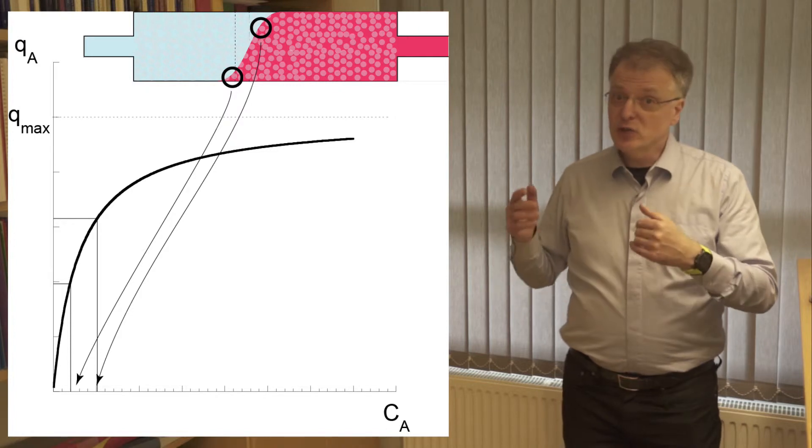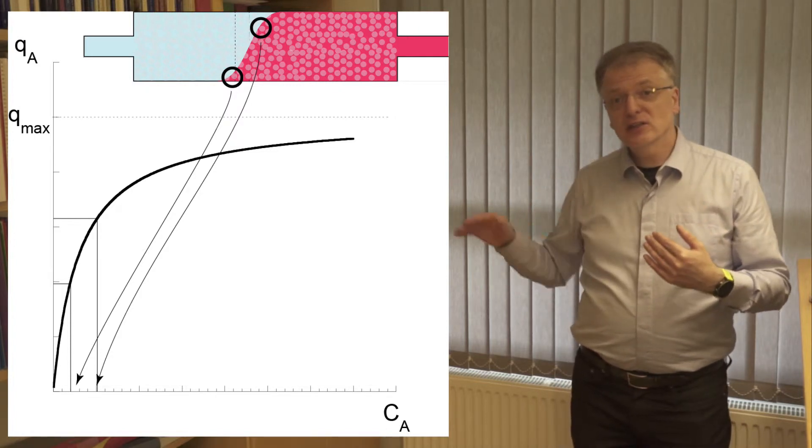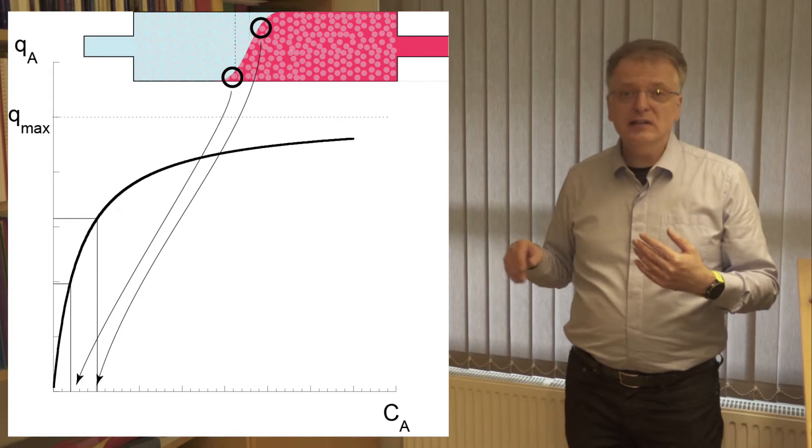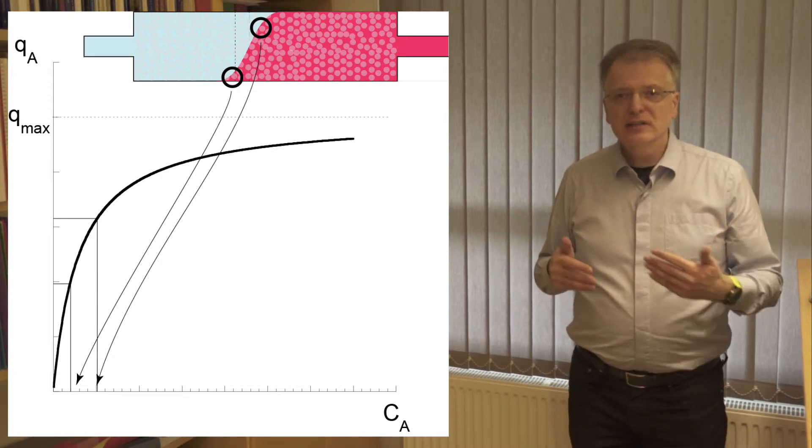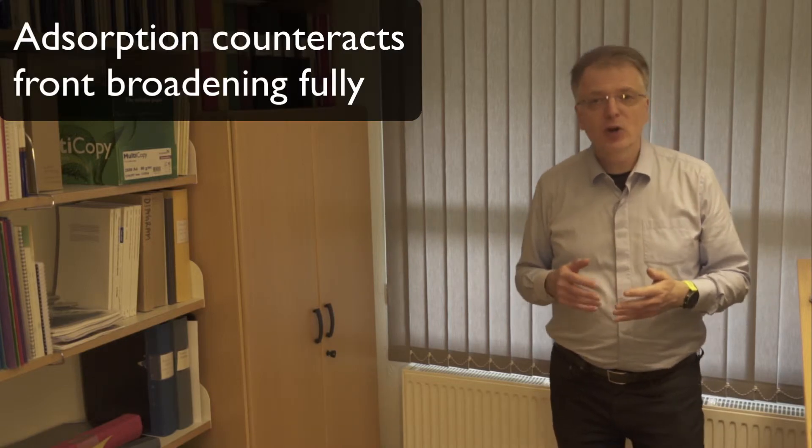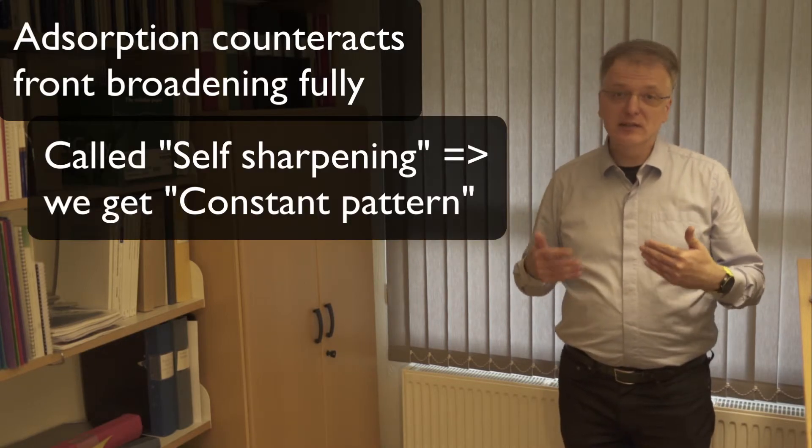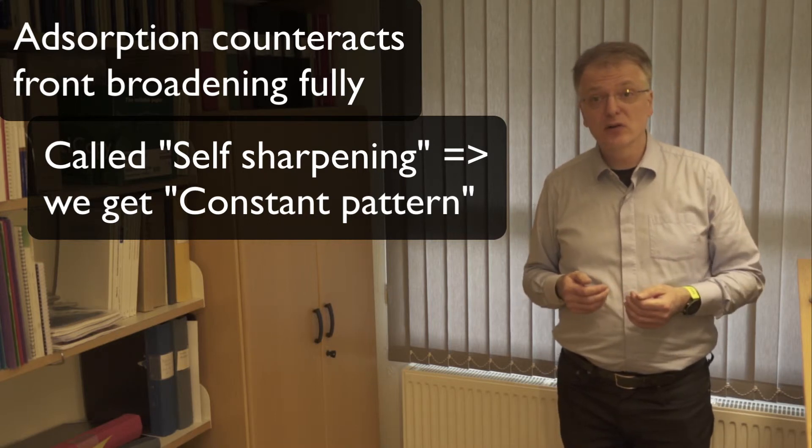If the adsorption isotherm is favorable, the fraction adsorbed at low concentration is disproportionately high compared to the concentration. This eventually slows down the low concentration part of the front so much that it totally counteracts the broadening of the front. This phenomenon is called self-sharpening and is the reason why we get constant pattern.